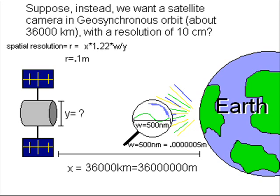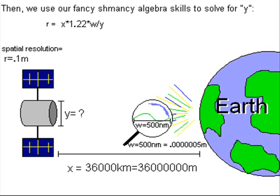Now, suppose instead we want a satellite camera in geosynchronous orbit, which is 36,000 kilometers away, with a resolution of about 10 centimeters. This would allow continuous observation.